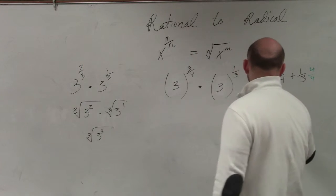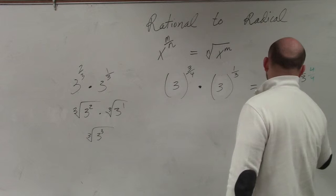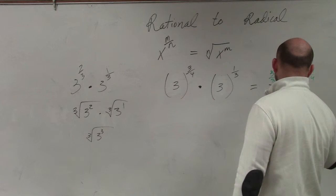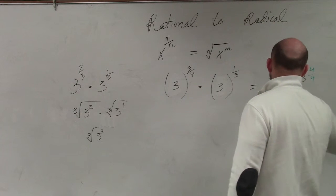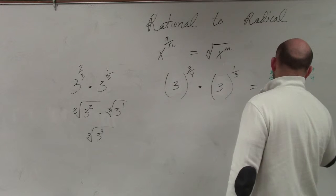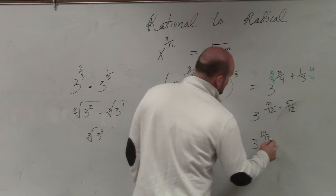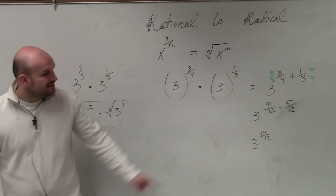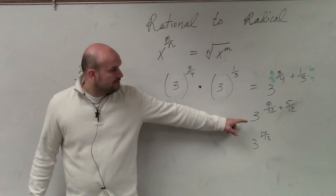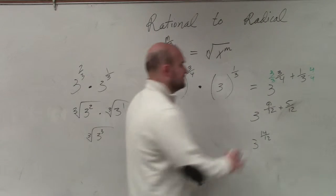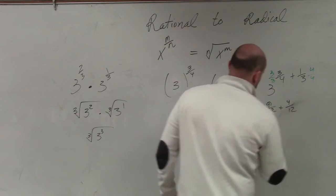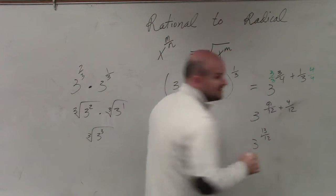Then I end up coming up with 9 twelfths plus 5 twelfths, which ends up giving us 3 to the 14 twelfths, right? Oh, 4 twelfths, thank you. So it becomes 3 to the 13 twelfths.